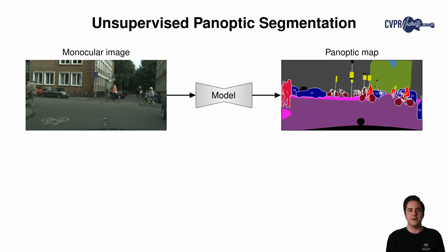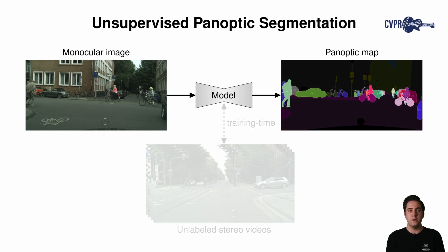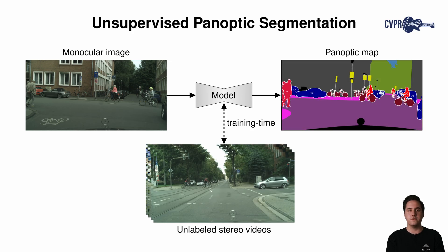Our goal is to predict panoptic maps from a monocular scene-centric image without any form of human supervision. A panoptic mask assigns a semantic class label to every pixel while detecting individual object instances. We only train using unlabeled stereo videos.